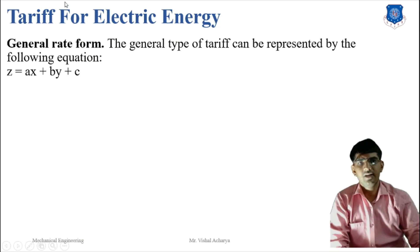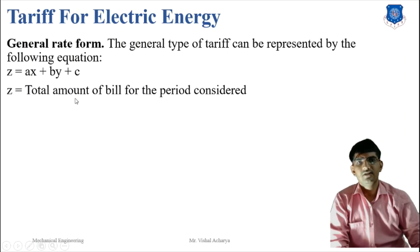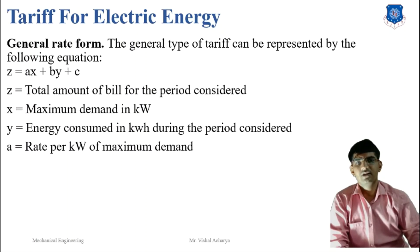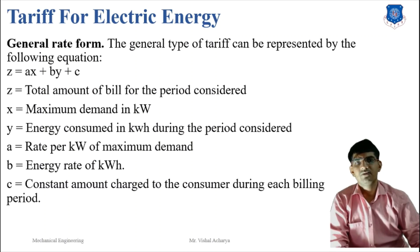Here is the general rate form. The general type of tariff can be represented by the equation: Z = AX + BY + C. Here Z is the total amount of bill for the period considered. X is the maximum demand in kilowatts. Y is the energy consumed in kilowatt-hours during the period. A is the rate per kilowatt of maximum demand. B is the energy rate per kilowatt-hour. C is the constant amount charged to the consumer during each billing period.